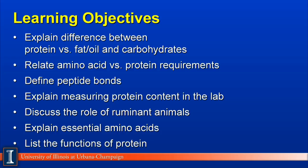Let's quickly review the learning objectives of this module. We want to explain the differences between proteins versus fats, carbohydrates, and oils, and be sure we know chemically how to define them. We'll understand the relationship between amino acids and protein requirements, define what a peptide bond is, how it's formed, and why it's important in animal nutrition. Next we'll talk about how you would analyze protein in the lab, the role of proteins in ruminant animals, the importance of essential amino acids, and wrap up with a listing of key functions protein handles in livestock nutrition.